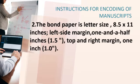Next, the bond paper is letter-sized, 8.5 by 11 inches, with the left side margin at 1.5 inches, and the top and right margin at 1 inch.